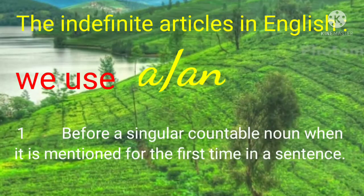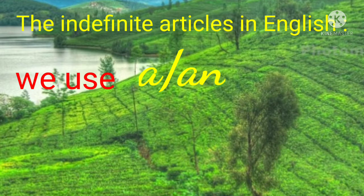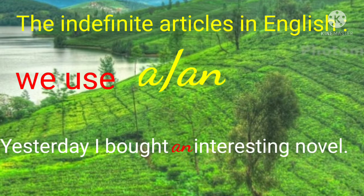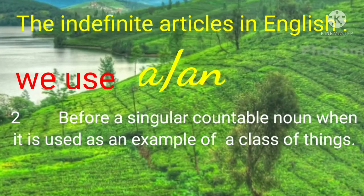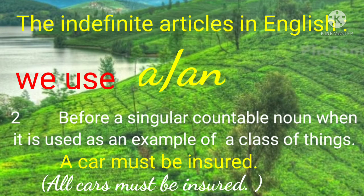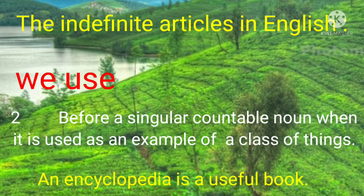First, before a singular countable noun when it is mentioned for the first time in a sentence. For example: I saw a woman with a baby in her hand. Yesterday I bought an interesting novel. Second, before a singular countable noun when it is used as an example of a class of things. For example: A car must be insured — it means all cars must be insured. An encyclopedia is a useful book — that means all such books are useful.